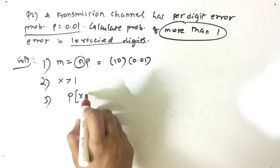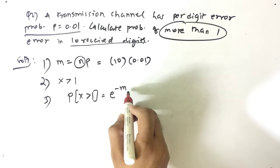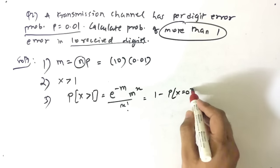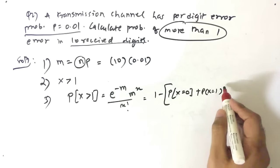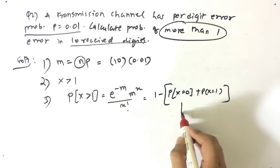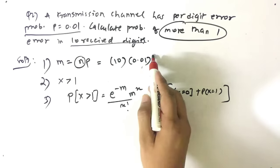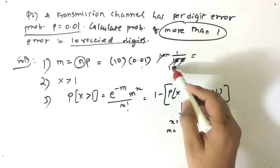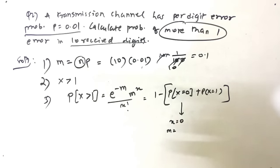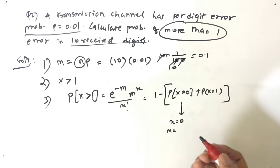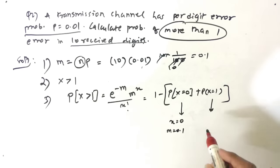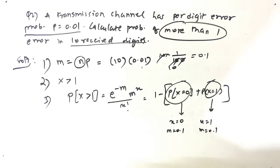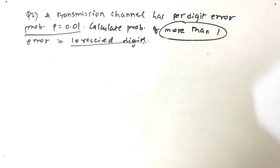Applying the formula: P(x > 1) = e raised to minus m, times m raised to x, upon x factorial. This is rewritten as 1 minus [P(x=0) + P(x=1)]. Plug in m = 0.1 for both x = 0 and x = 1, find the values of those two terms, add them, and subtract from 1.